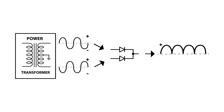We can swap out the tube rectifier for two solid state diodes that perform the exact same function. The leads to the secondary of the power transformer connect to the two diodes, which are then connected together by a common connection, resulting in the same AC voltage waveform with only the positive humps of the original waveforms.